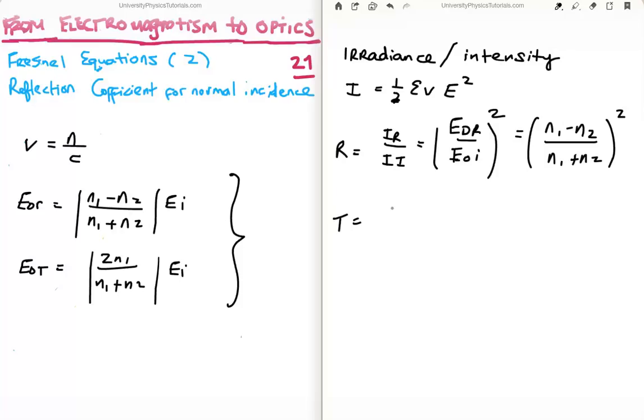Then to get the transmission coefficient, we do something similar. We take the incident irradiance and the transmitted irradiance and take their ratio. This time the half is going to cancel, but epsilon and the speed won't cancel. So what we're left with is the transmission coefficient, which equals 4 times n1 n2 divided by (n1 + n2) squared.